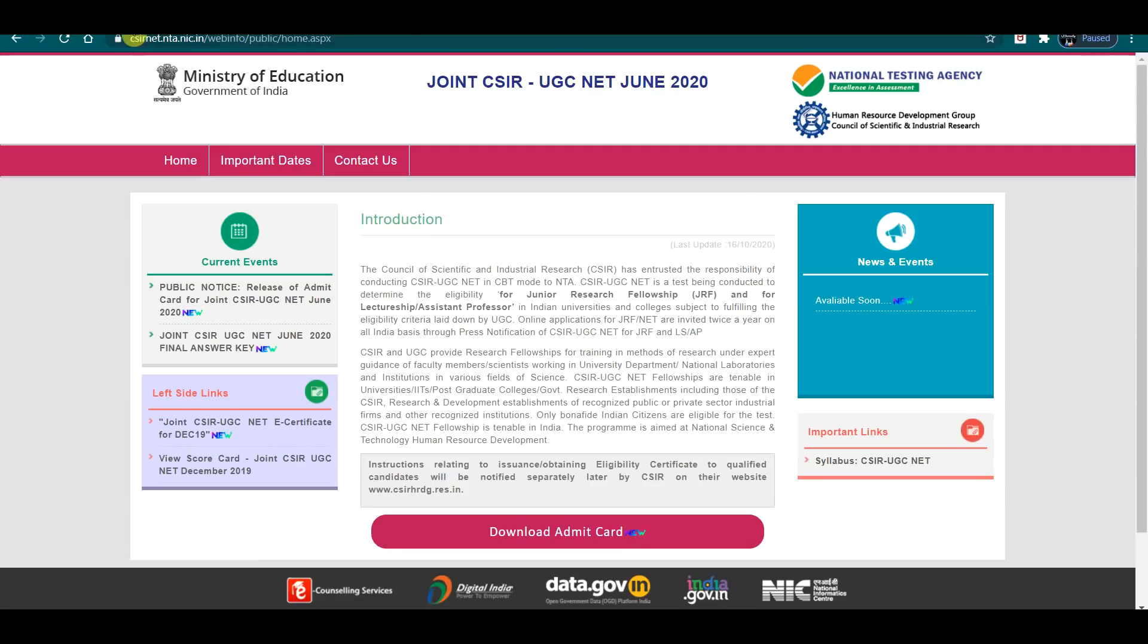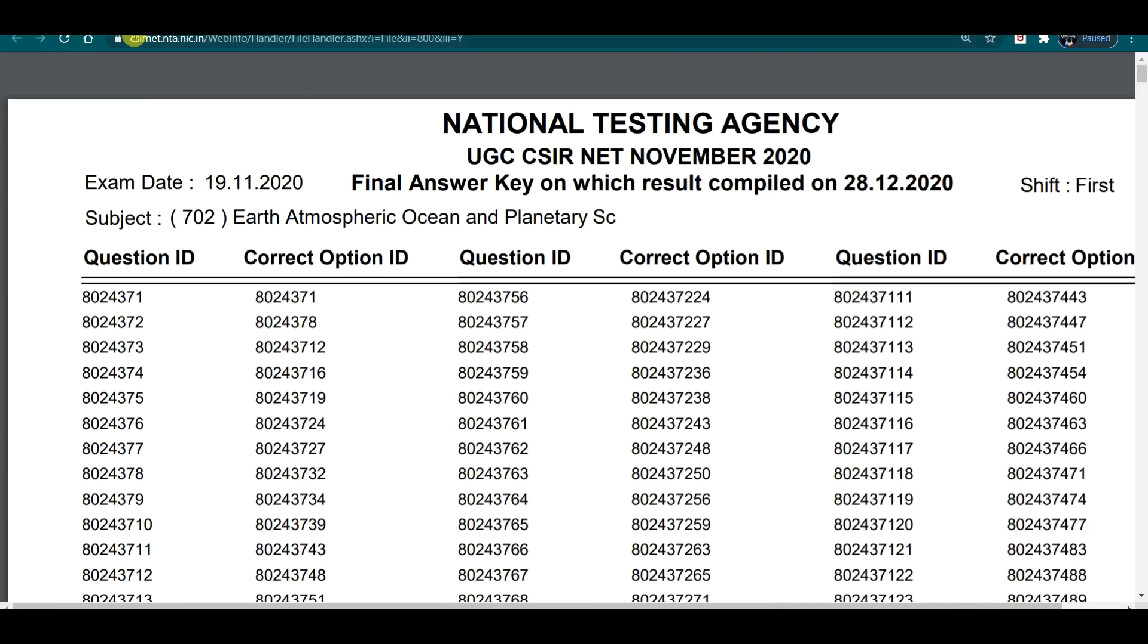And from here you will see, Joint CSIR UGC NET June 2020 final answer. This will open in your PDF. So the question ID is mentioned here, the correct option is mentioned here.